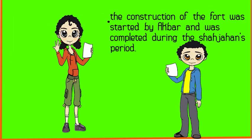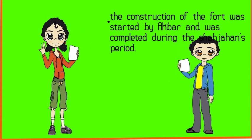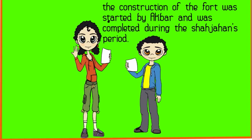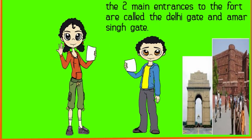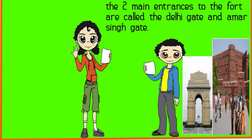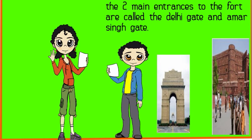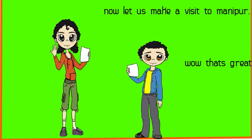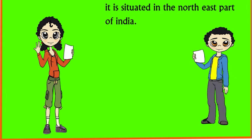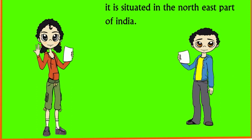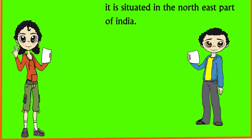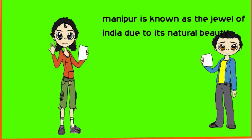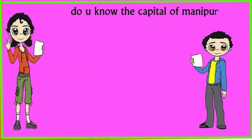The famous Agra Fort lies 2 km away from the Taj Mahal. The construction of the fort was started by Akbar and completed during Shah Jahan's period. The two main entrances to the fort are called the Delhi Gate and Amar Singh Gate. Now let us make a visit to Manipur. Manipur is situated in the North East part of India and is known as the Jewel of India due to its natural beauty. Do you know the capital of Manipur?